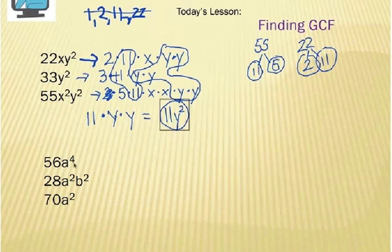All right, my next set of terms is 56a to the 4th, 28a squared b squared, and 70a squared. So the question again is, what's the greatest common factor of these three algebraic terms? So I need to make a split apart factor list. It's called a prime factor list. And what I'm going to have to do is, if I can't do it in my head, I'll go ahead and make a prime factor tree and break it apart.